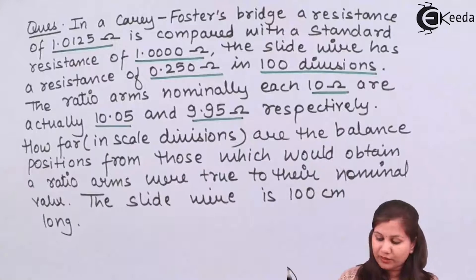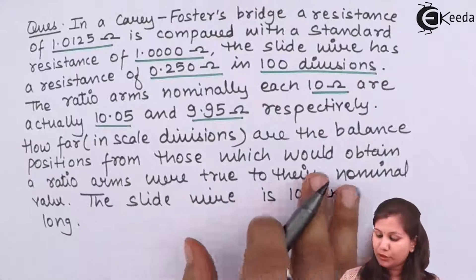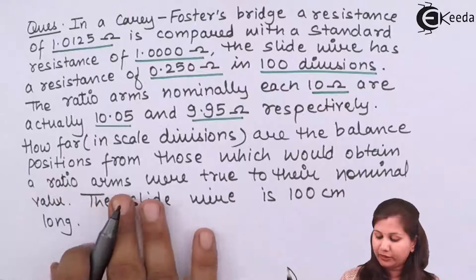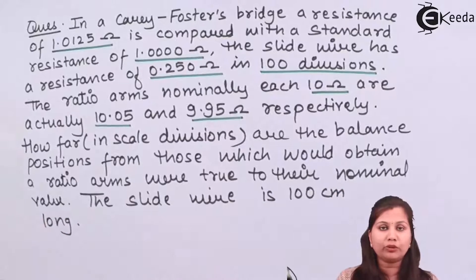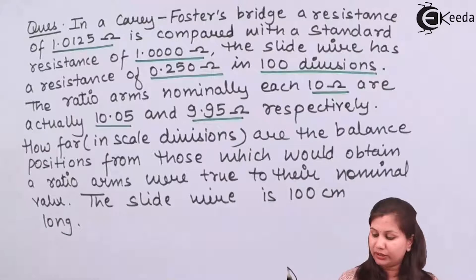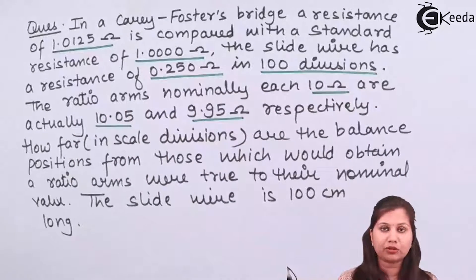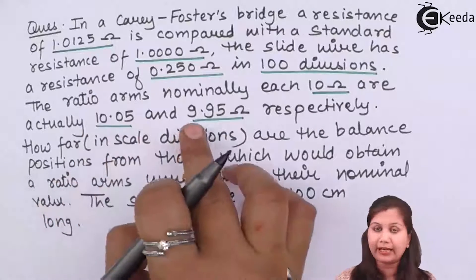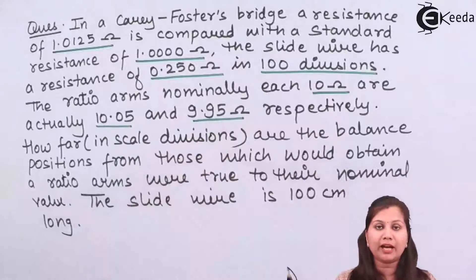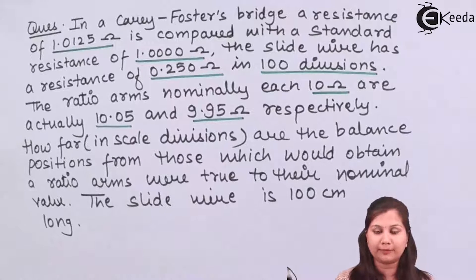We have to calculate how far the balance positions are from those which would be obtained when the ratio arms were true to their nominal value. So we take two measurements: one with the nominal value of the ratio arms as 10 ohm, and another when the values are 10.05 and 9.95, and find the difference between the two measurements.